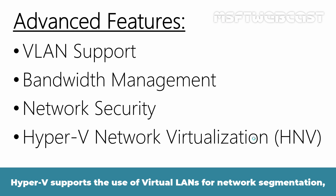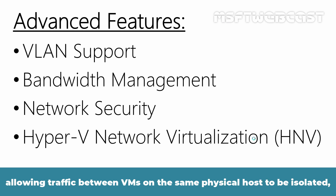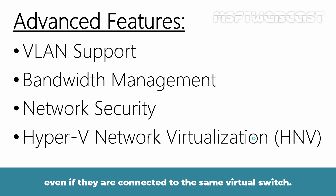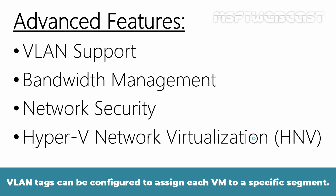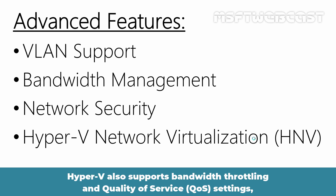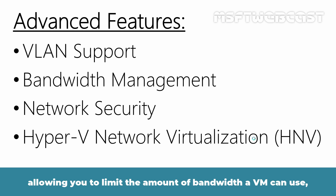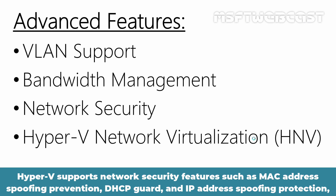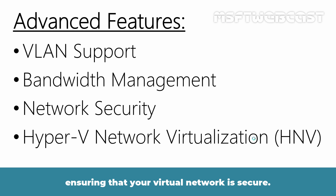Hyper-V supports the use of virtual LANs for network segmentation, allowing traffic between VMs on the same physical host to be isolated even if they are connected to the same virtual switch. VLAN tags can be configured to assign each VM to a specific segment. Hyper-V also supports bandwidth throttling and quality of service settings, allowing you to limit the amount of bandwidth a VM can use, ensuring fair distribution of resources across multiple VMs. Hyper-V also supports network security features such as MAC address spoofing prevention, DHCP guard, and IP address spoofing protection, ensuring that your virtual network is secure.